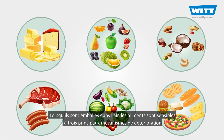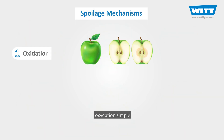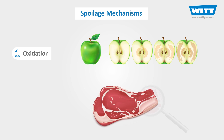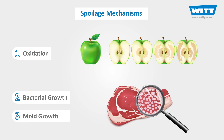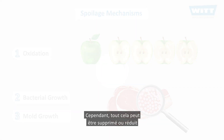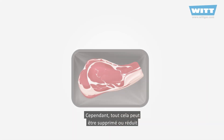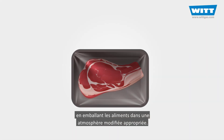When packed in air, food is susceptible to three main spoilage mechanisms: simple oxidation, bacterial growth, and mould growth. However, all of these can be suppressed or reduced by packaging the food in the appropriate modified atmosphere.